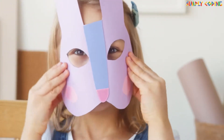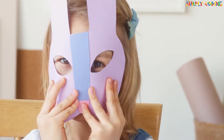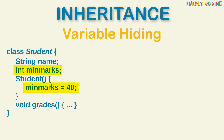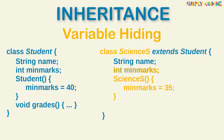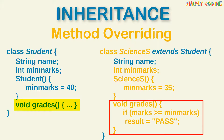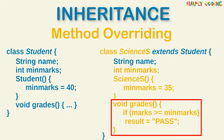Sometimes as a child we inherit features we are not happy about and would rather hide or provide our own implementation of. In OOPS, you can do this by variable hiding or method overriding. If the derived class also declares a variable minMarks, it effectively hides the base class variable and only the subclass variable is used — this is called variable hiding. Similarly, if the base class has a method grades and the derived class writes a method with exactly the same signature, it overrides the base class method. When the object of the derived class calls grades, it will call the derived class function only.